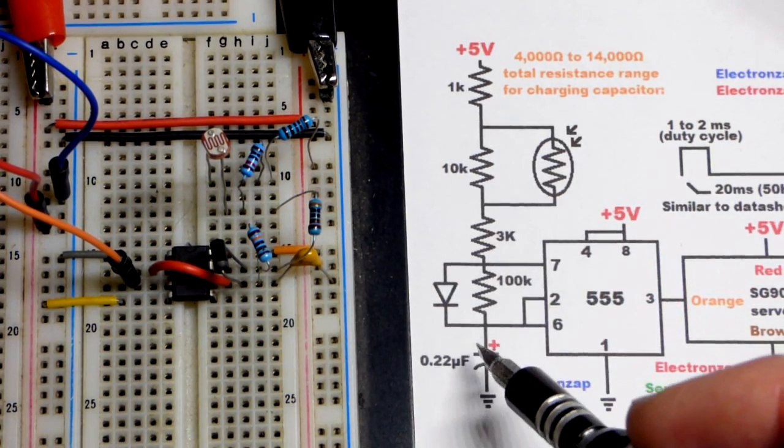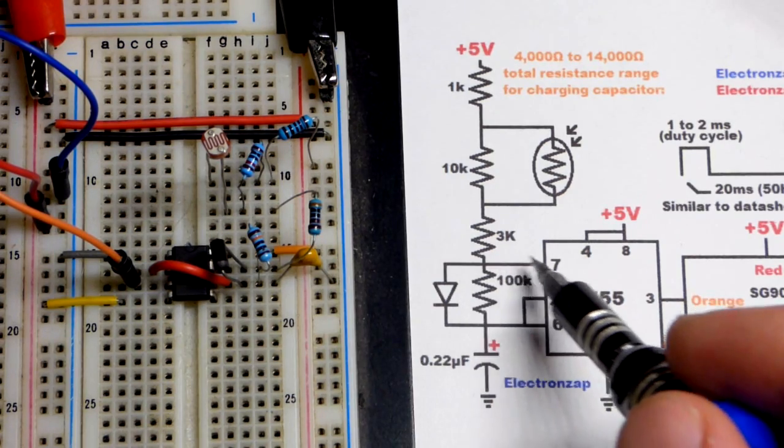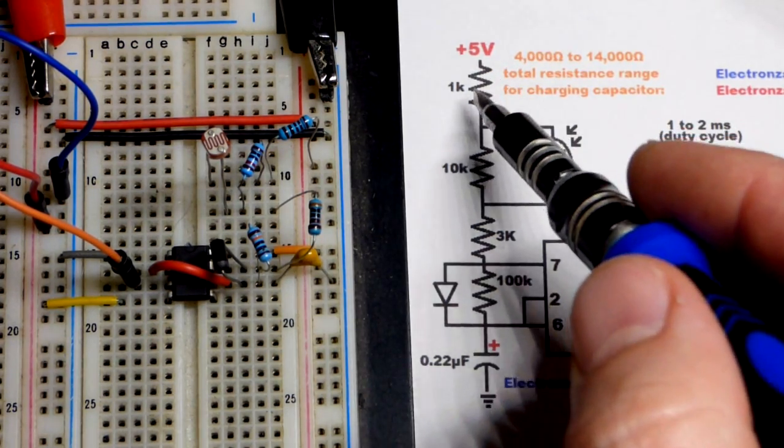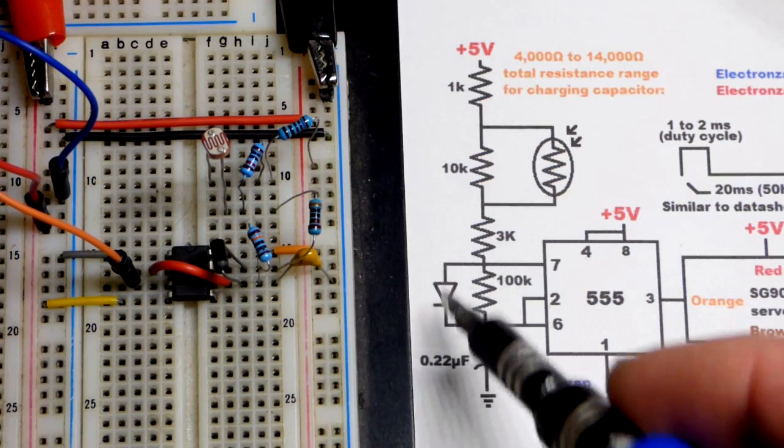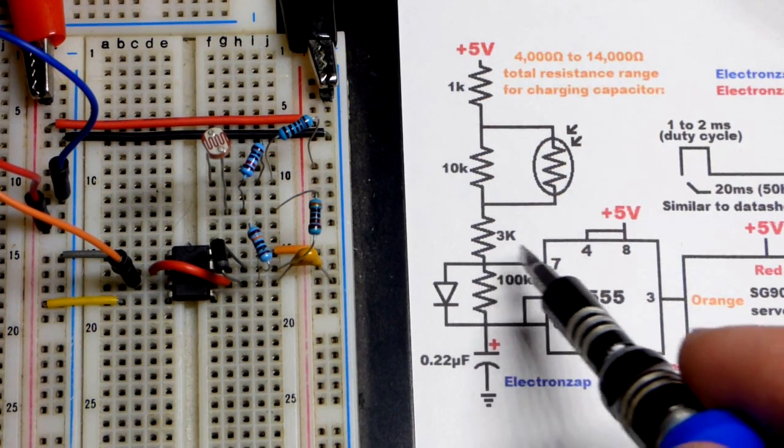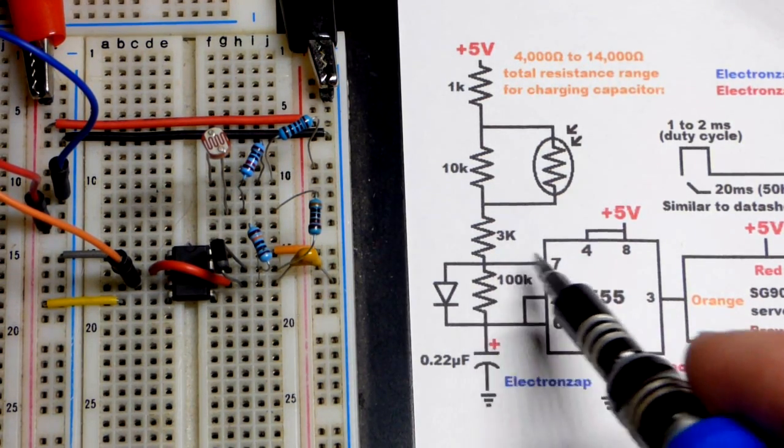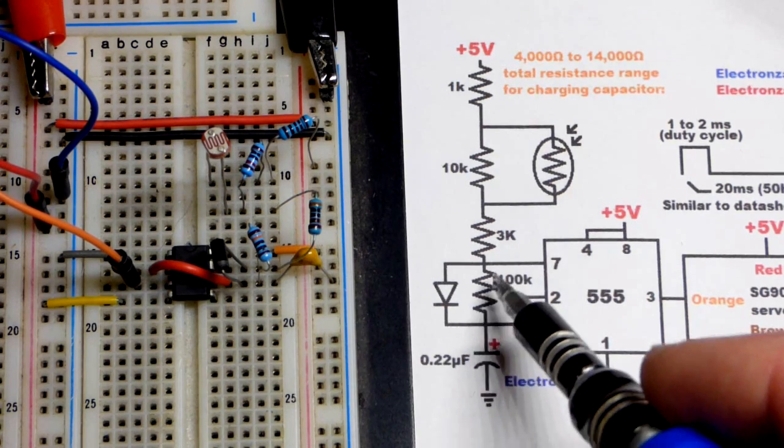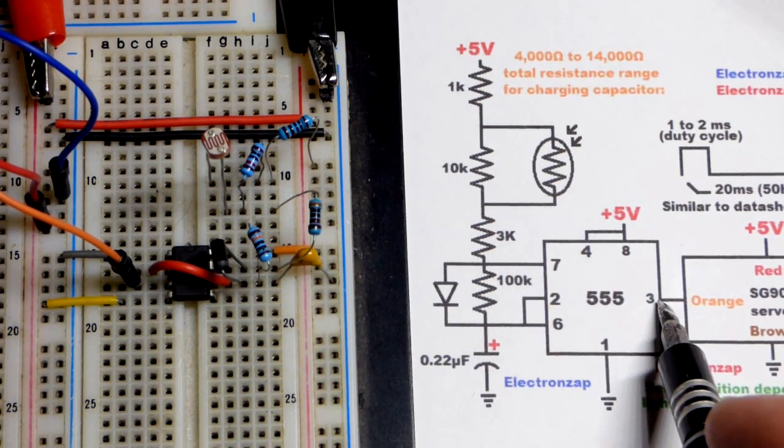Whatever current makes it through here also goes to ground so it doesn't affect the discharge, but it has to discharge through there. So you can see we have a maximum of 14,000 ohms of resistance while charging, whereas we have 100,000 ohms of resistance while discharging.